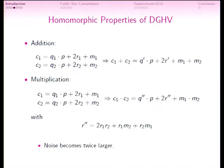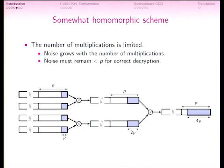With multiplication, the size of the noise increases — it is now twice as large — and this limits the number of multiplications we can perform because noise grows quickly but must remain smaller than P. Otherwise, reduction modulo P causes incorrect decryption. For example, starting with ciphertexts with ρ bits of noise, multiplying gives 2ρ bits, then 4ρ bits — growing exponentially. If we do one more multiplication we get 8ρ bits, which is larger than P and decryption fails.